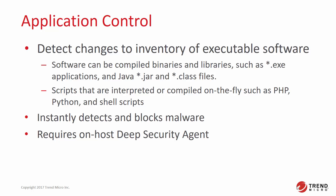Software can include compiled binaries and libraries, such as executable applications, Java jar files, and class files, but can also look for scripts that are interpreted or compiled on the fly, even though they remain editable like any plain text file, such as PHP, Python, or shell scripts.